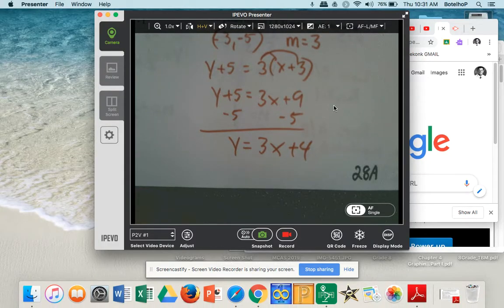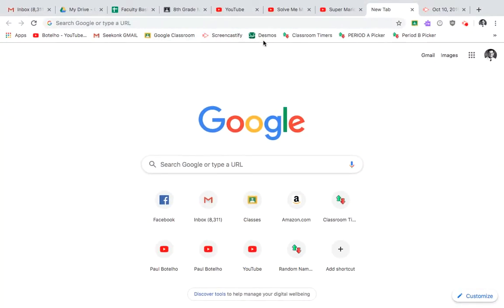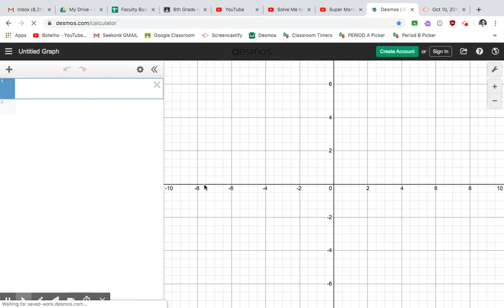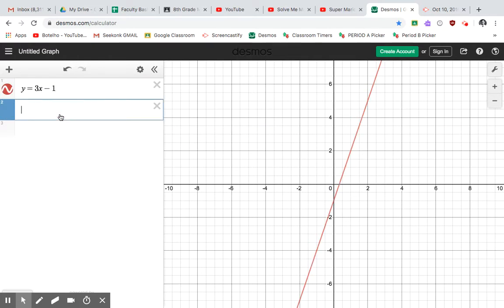Great, so if we go to Desmos just to prove that this works, here's my Desmos. So the first equation was originally y equals 3x minus 1, and then the next one we made was y equals 3x plus 4.